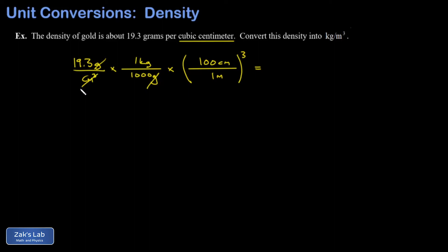That gives me cubic centimeters canceling and cubic meters in the denominator. So that 100 cubed in the numerator that's 10 to the sixth or a million and then I have a thousand in the denominator. Well a million divided by a thousand is just a thousand so I have 19.3 times a thousand or 19,300 kilograms per cubic meter.